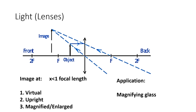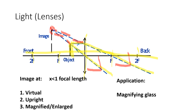For the third diagram, draw everything again. This time the object is within one focal length. Same process: draw a horizontal line through one F, and the other line through the center. Draw the arrows showing rays diverge, and because they diverge, draw dotted lines backwards. The dotted lines backwards will converge into one point, and use a dotted line to draw the image at that point.